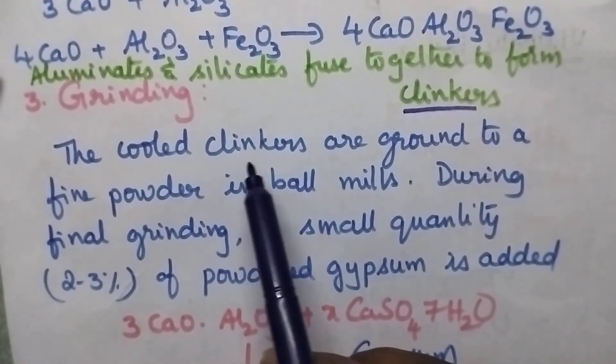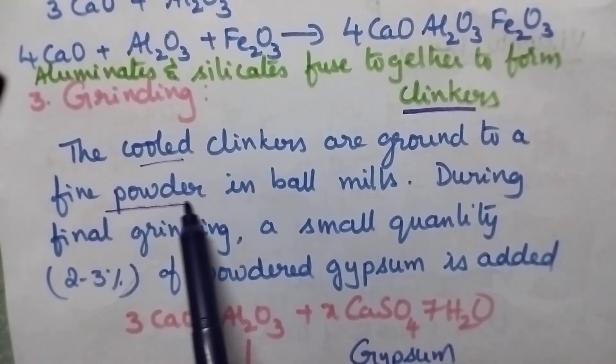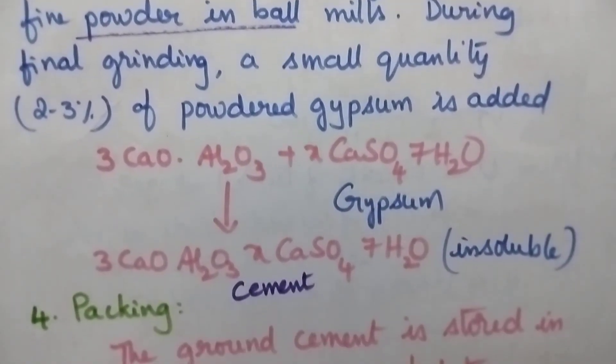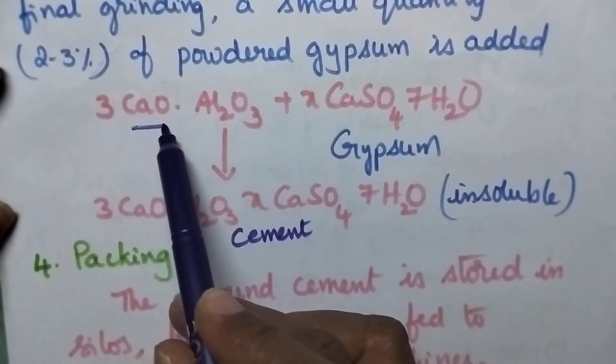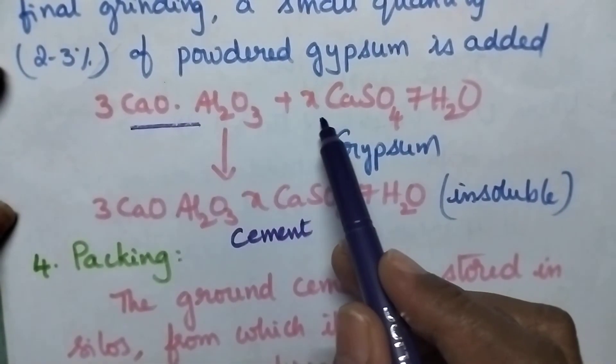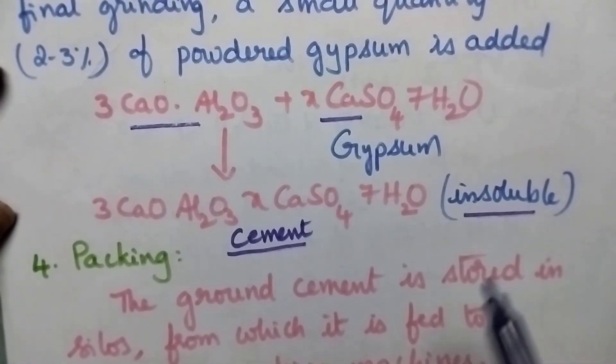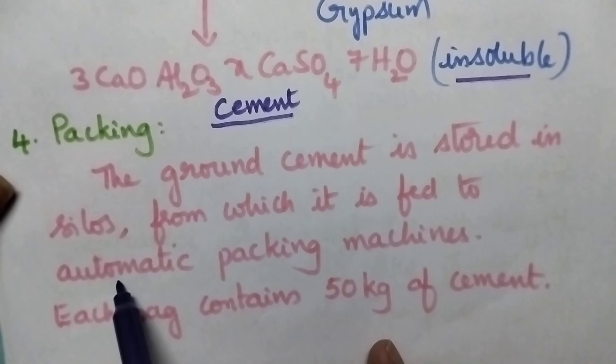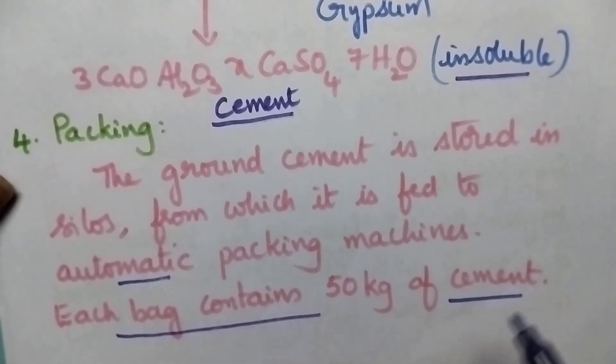In the third step, the clinkers are cooled and ground to a fine powder in ball mills. During the grinding process itself, a small amount of gypsum powder is added to the fine powder of the clinkers. This results in the formation of an insoluble compound called cement. Finally, it is packed automatically using automatic packing machines in silos. Each bag contains 50 kg of cement.